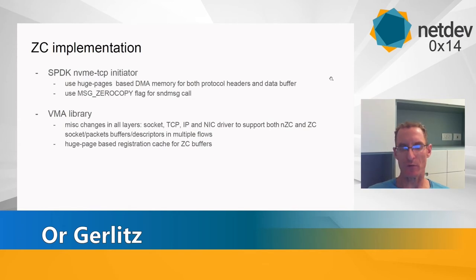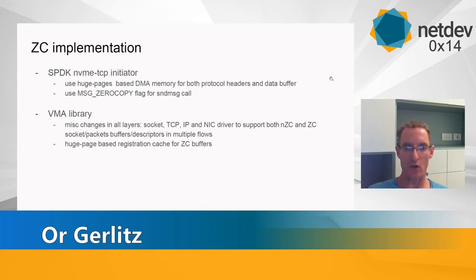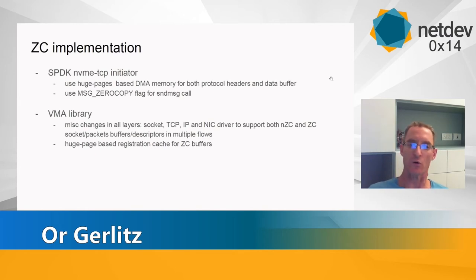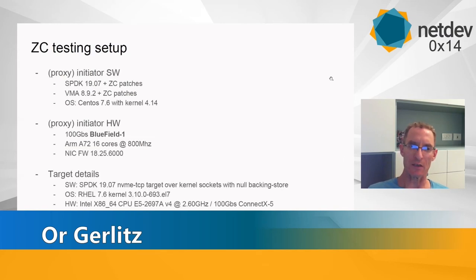The implementation itself was straightforward. In SPDK, since we skipped notifications, we only needed to patch it so that everyone — both protocol headers and data buffers — uses DMA memory, and of course use the MSG_ZEROCOPY flag with the appropriate getsockopt/setsockopt calls. In VMA, it was more widespread changes because you take a TCP stack and have to modify it so that when this flag is provided, it does no copies in its normal flows. We also added the huge-page-based registration cache for zero copy buffers.